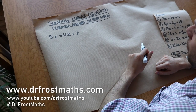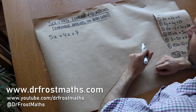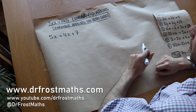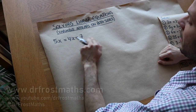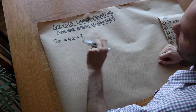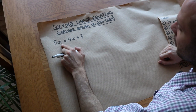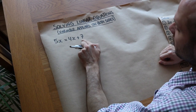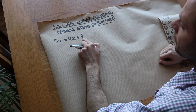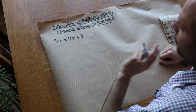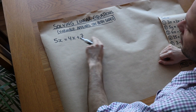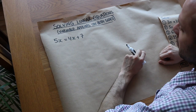Hello and welcome to this video on solving linear equations where the variable appears on both sides of the equation. What makes this a linear equation is that we have x terms like 5x, 3x, 7x, and constant terms like plus 7 which don't have a variable, but we don't have any x squared or x cubed terms. We say this equation is linear because of that.